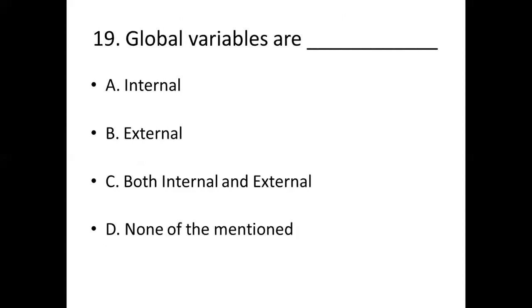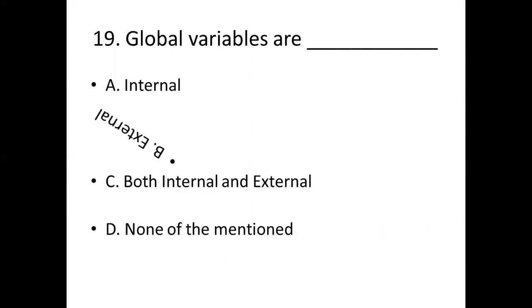Nineteenth bit: Global variables are — Option A: internal. Option B: external. Option C: both internal and external. Option D: none of the mentioned. Answer: Option B, internal.